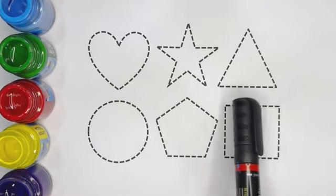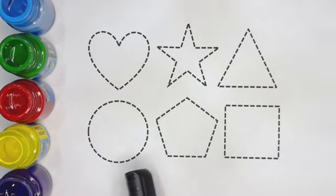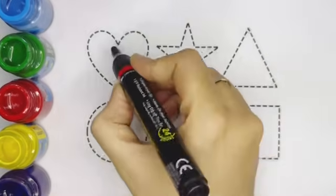Heart, star, triangle, circle, pentagon, square. Kids, now let's draw the shapes.